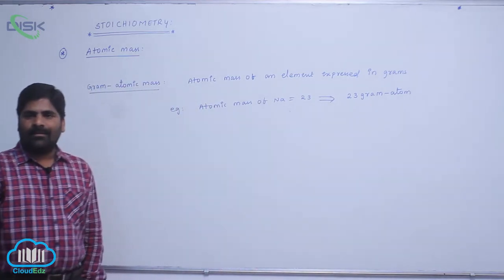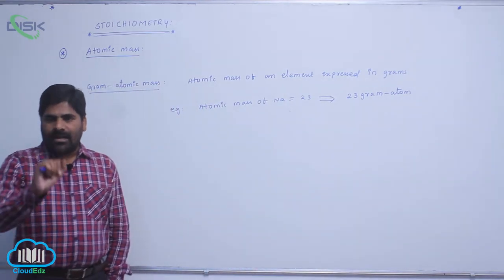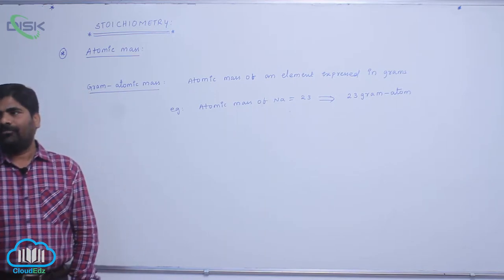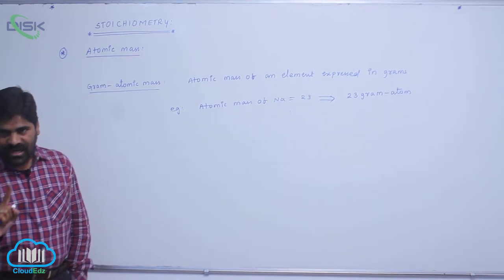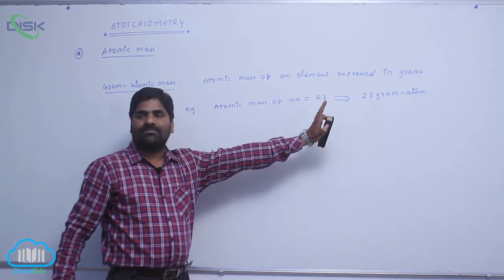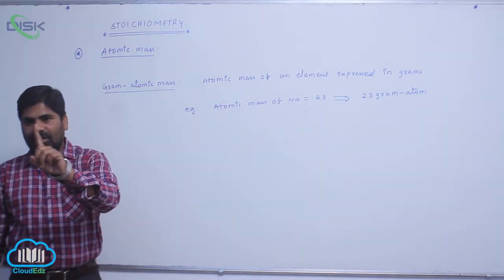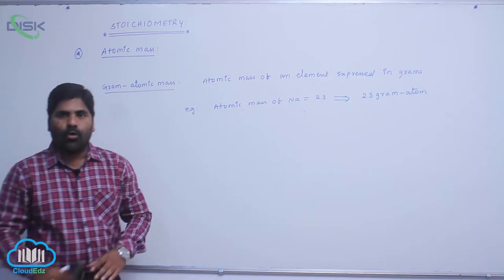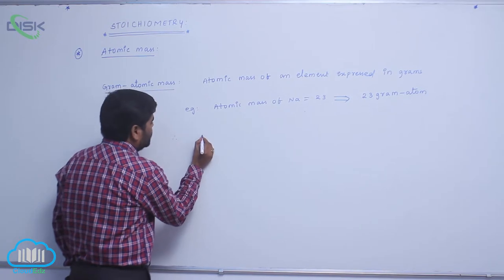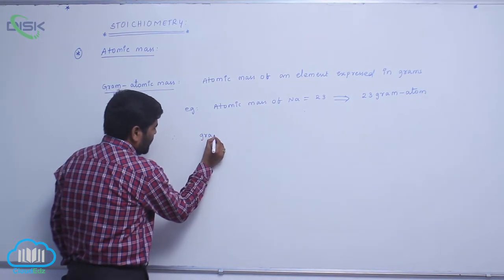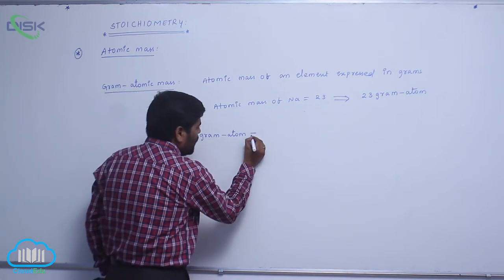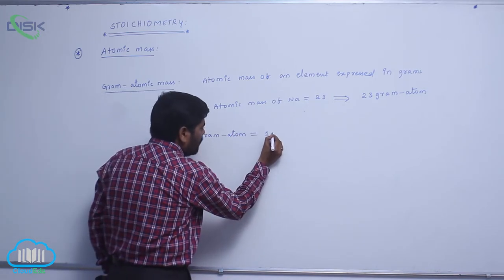Please remember, one gram atom always indicates a mole. So therefore, 23 gram atoms is nothing but one mole. Gram atom is always equal to one mole.